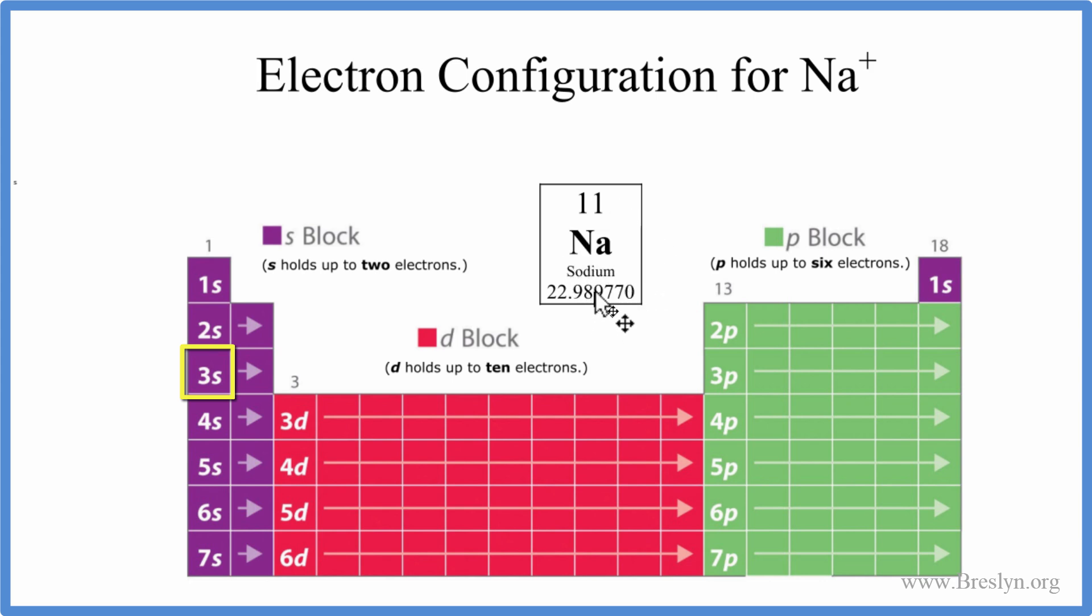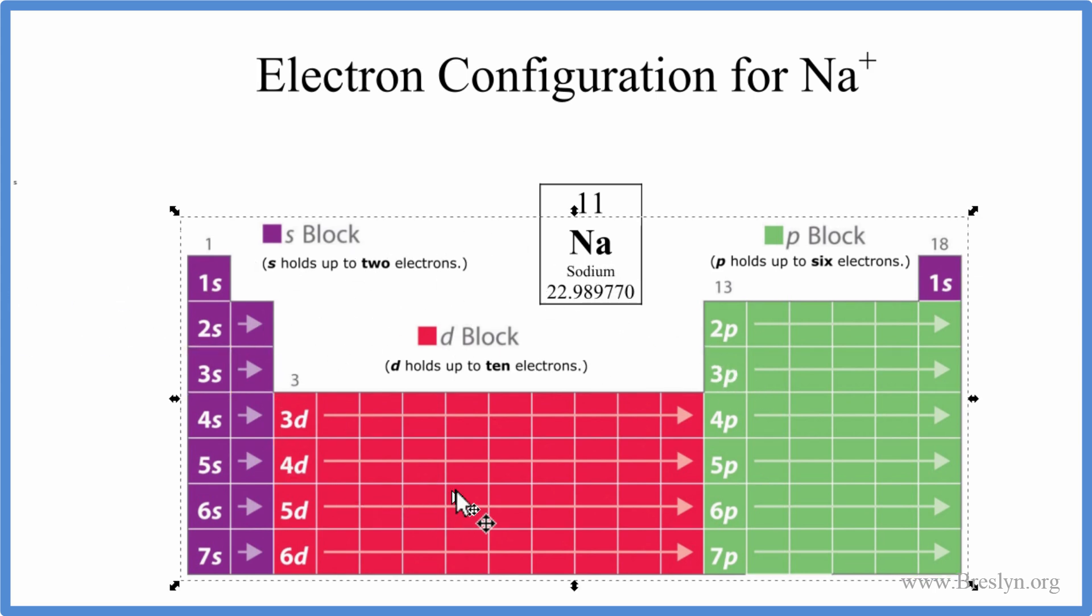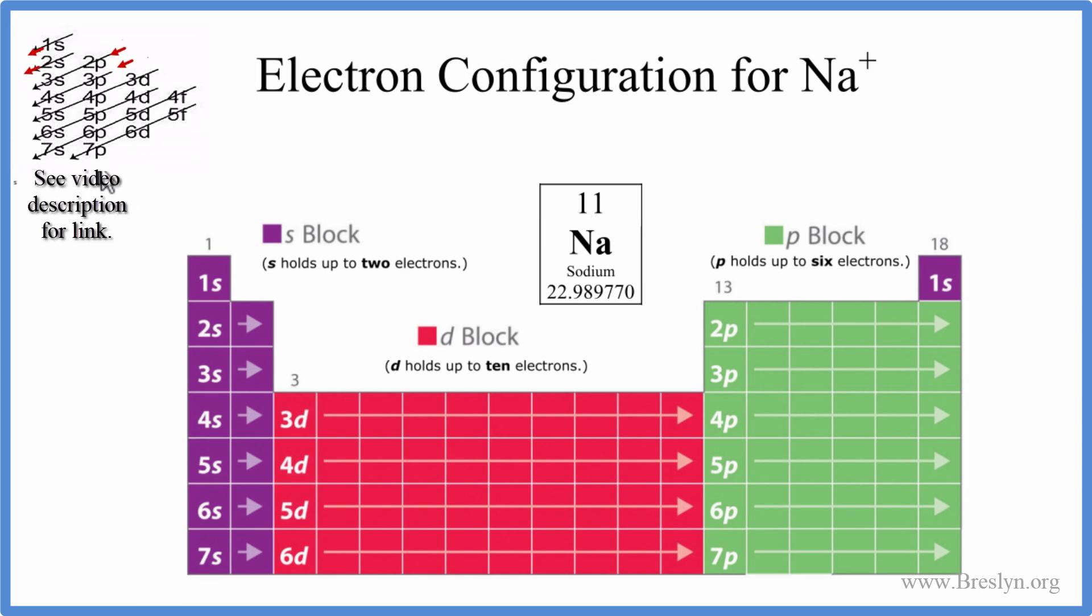We're going to spread those out around the nucleus when we write the electron configuration. We'll use this chart here to do that. You can also use this table here. There's a link in the description how to do that. I think this is a better way to do it, though. So let's start. We have Na, we have 11 electrons.